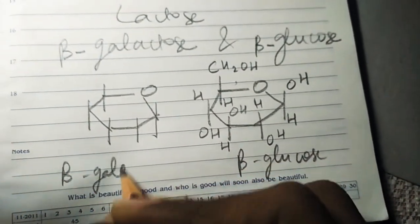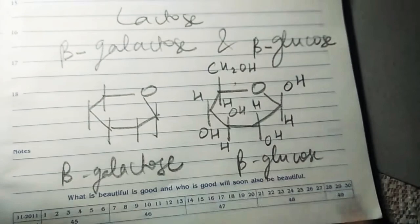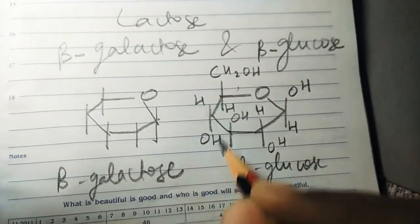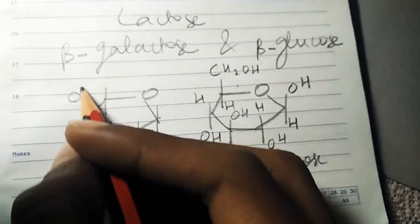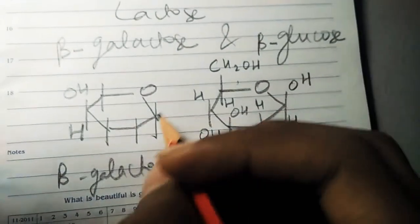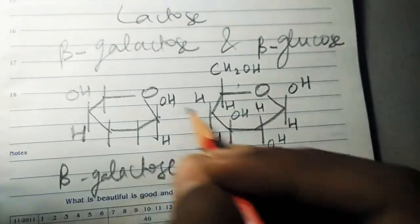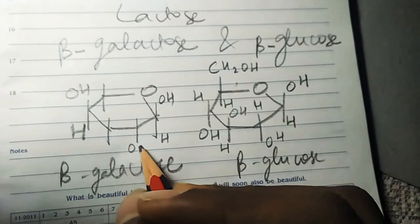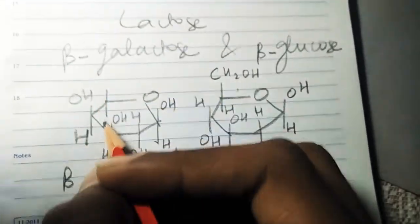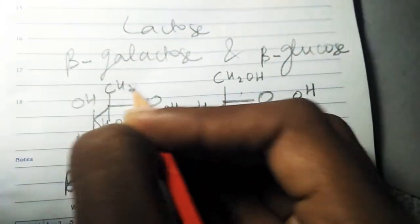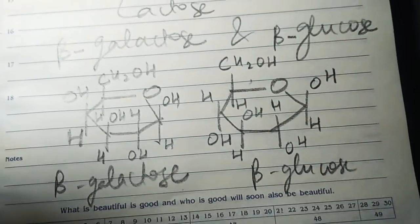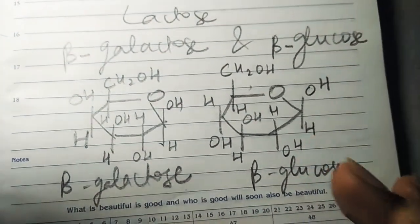The beta-galactose structure is almost the same, but except this: here the OH comes at the upper side and the other things are the same as usual. OH, H, OH, H, OH and here H and CH2OH.